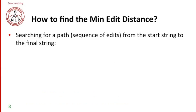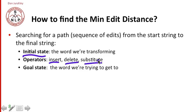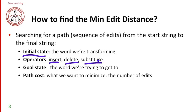All right. So how are we going to find this minimum edit distance? Our intuition for the algorithm is to search for a path, and by path we mean a sequence of edits from the start string to the final string. So we'll start with an initial state, so that will be the word we're transforming. We'll have a set of operators, insertion, deletion, substitution. And we'll have a goal state, that's the word we're trying to get to. And finally, we'll have a cost for the path of getting there, and that's the thing we're trying to minimize. So that's the number of edits, that's our path cost.